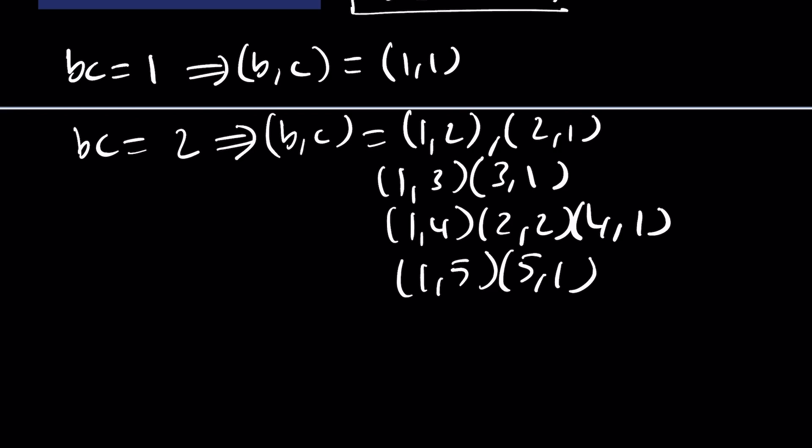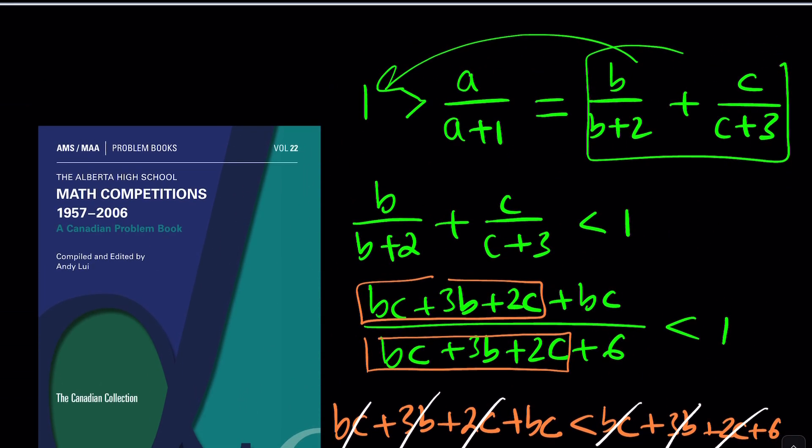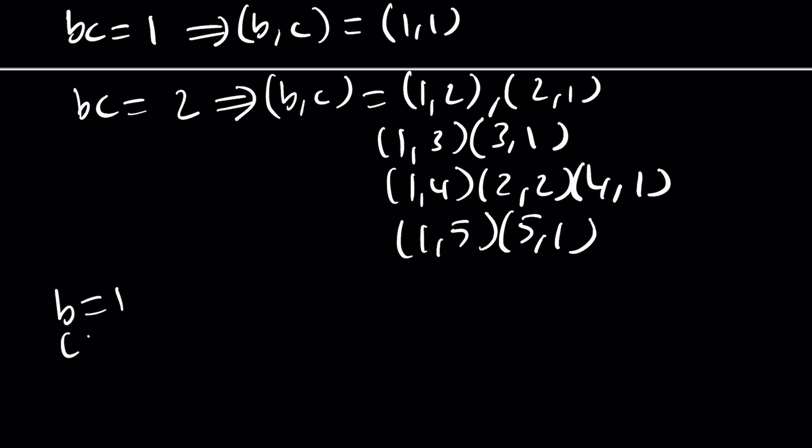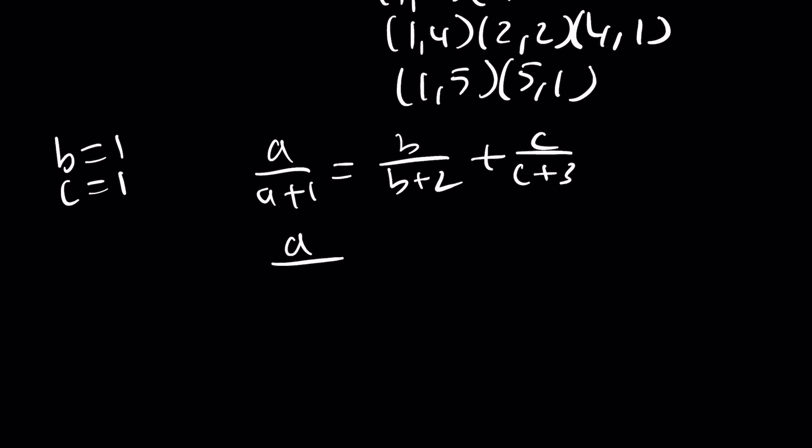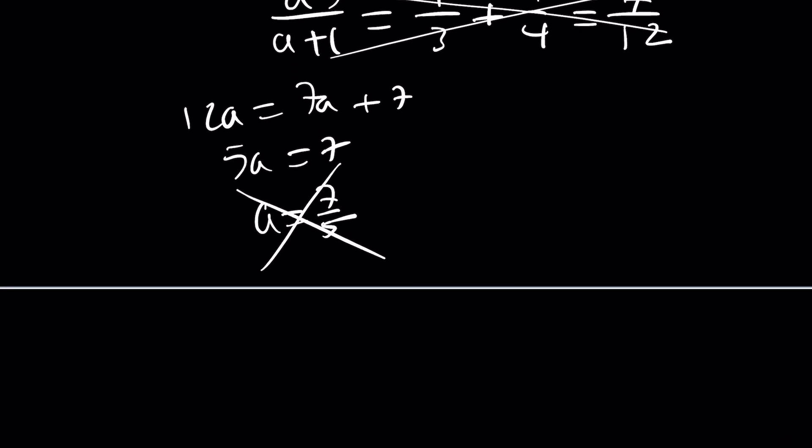Wait a minute. For each of these, we have to check the values of a because a also has to be a positive integer. And how do we check that? From here. If we know bc values, for example, if b is one and c is one, then we know that a over a plus one equals b over b plus two plus c over c plus three. So in this case, a over a plus one is just going to be one over three plus one over four, which is seven over 12. This can't be happening because from here, we're not getting integer solutions or are we? Let's find out. Cross multiply. 12a is seven a plus seven. Five a equals seven. A equals seven over five. Unfortunately, a is not an integer, so we're not going to be able to accept that.